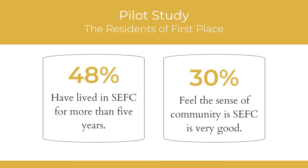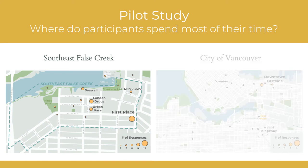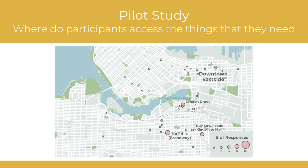When engaging with residents, we identified how long they have been living in Southeast False Creek and whether they feel a sense of community in the neighborhood. We also explored where residents were spending time in Southeast False Creek and throughout the city of Vancouver. In Southeast False Creek, a majority of participants spent their time in their building and at retail stores in Olympic Village Square. In the city of Vancouver, participants spent most of their time in the Downtown Eastside. To access the things that they need, such as groceries, participants are going to retail stores in Southeast False Creek, but often have to leave the neighborhood for more affordable options.